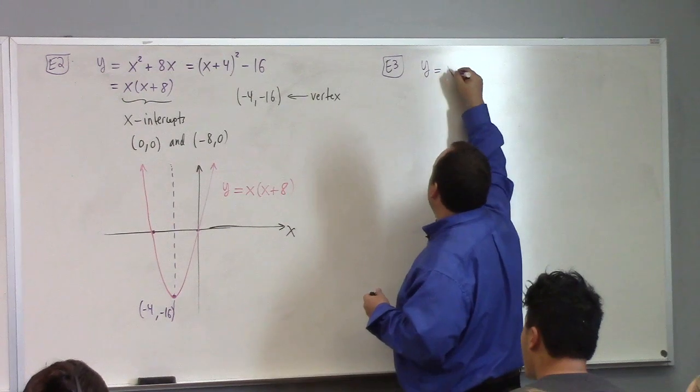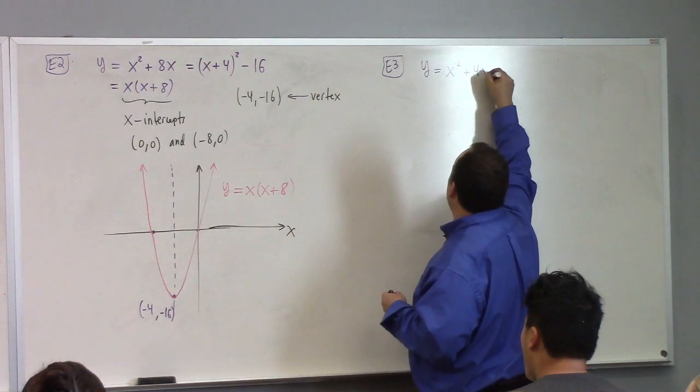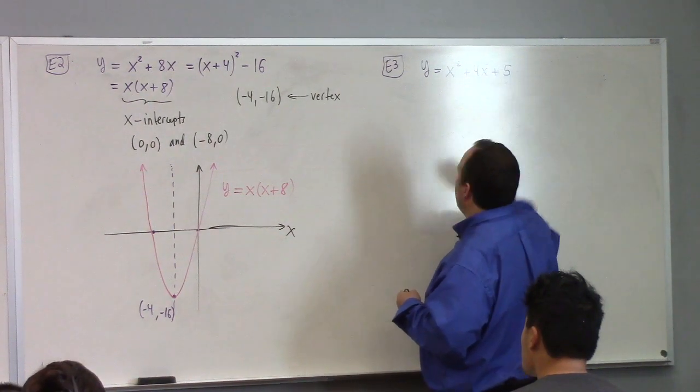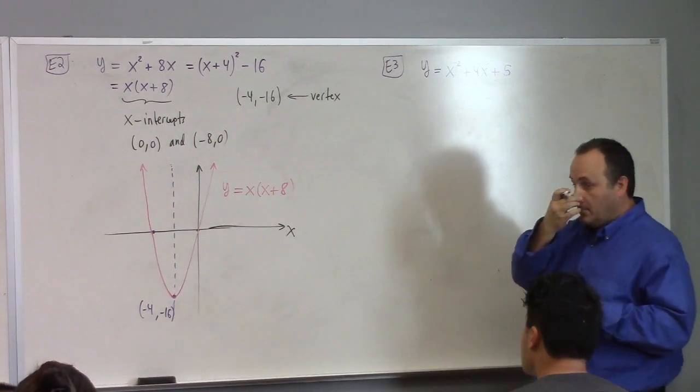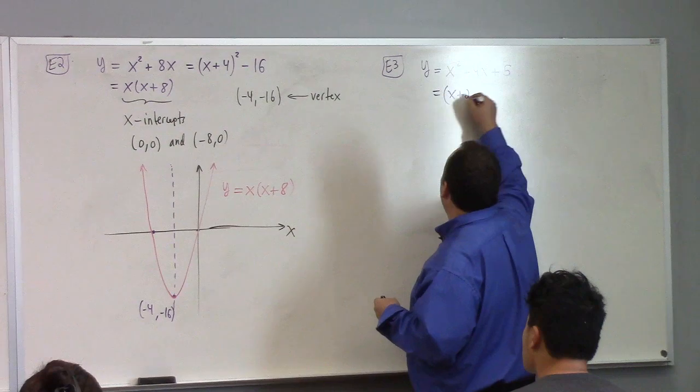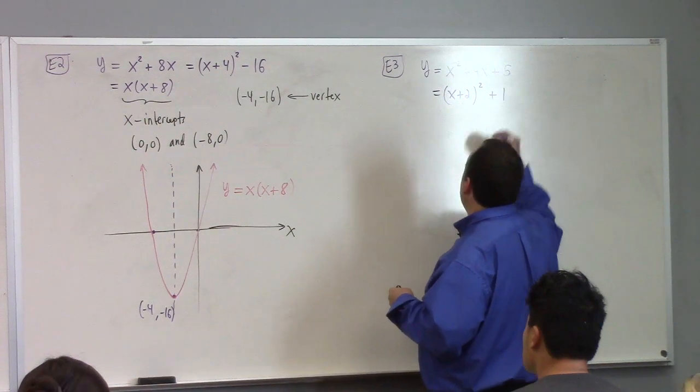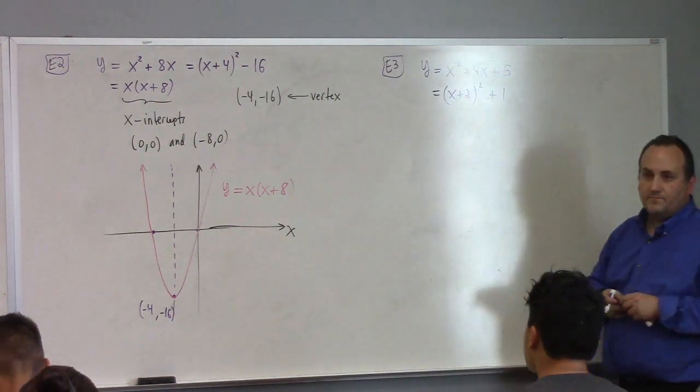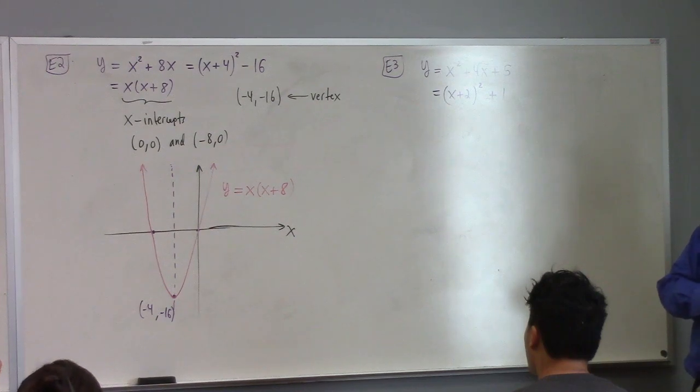So for graphing parabolas I mostly want you guys to be able to find x-intercepts, the y-intercept, the vertex, and of course the axis of symmetry. You ought to be able to find that. What's the axis of symmetry? It's kind of stupid. It's just x equals the x coordinate of the vertex. So the axis of symmetry here is x equals minus 4. Let's look at another one.